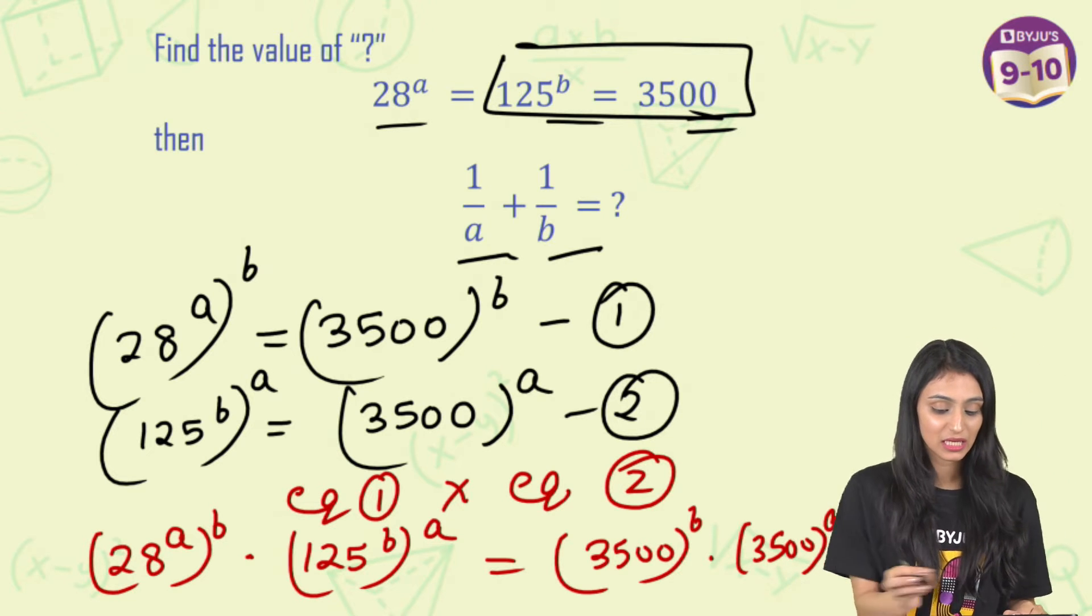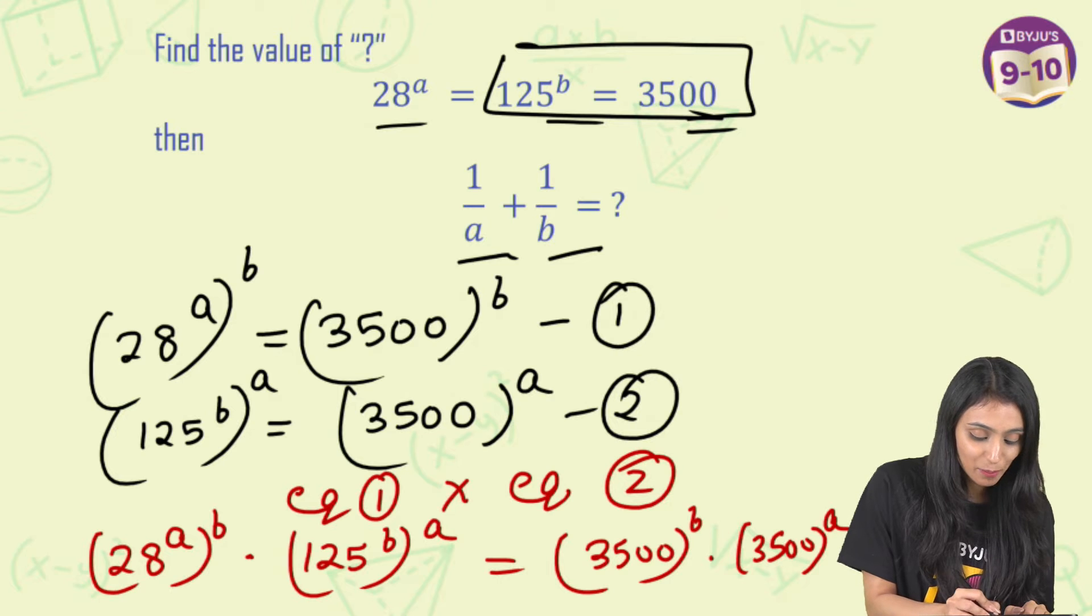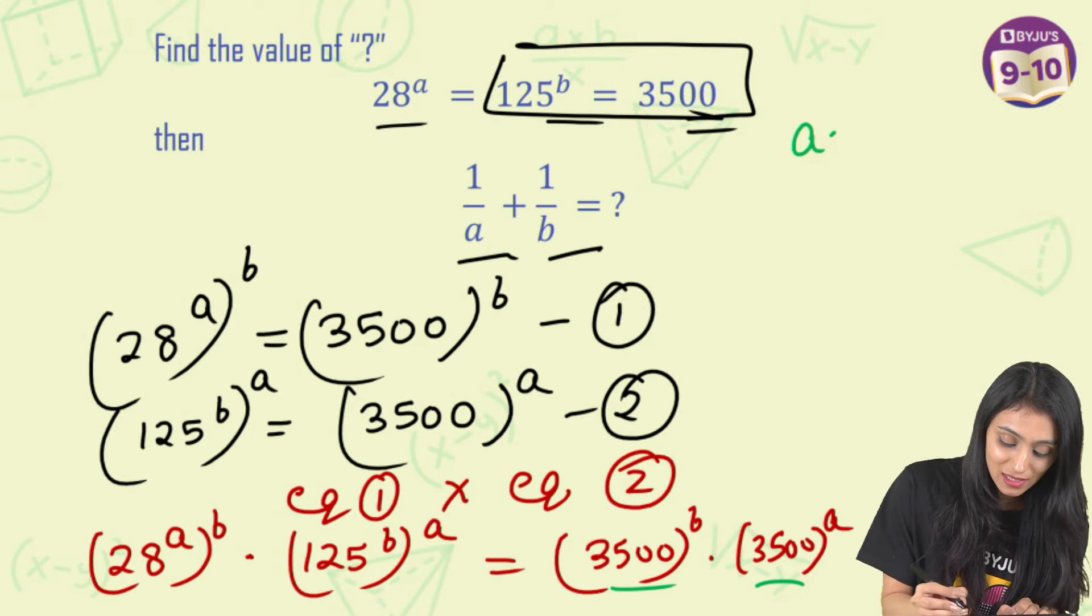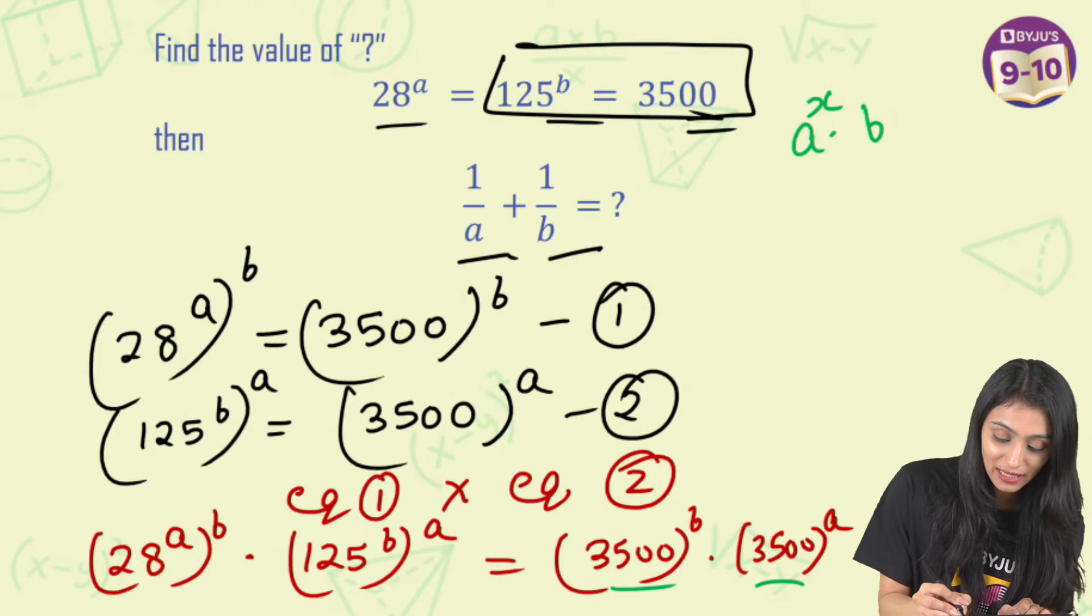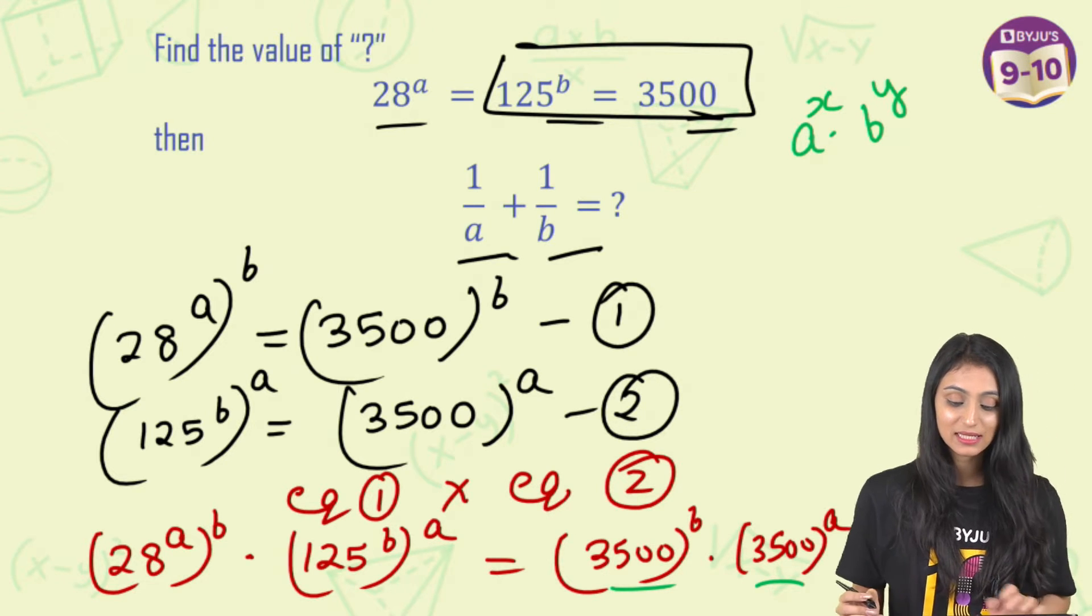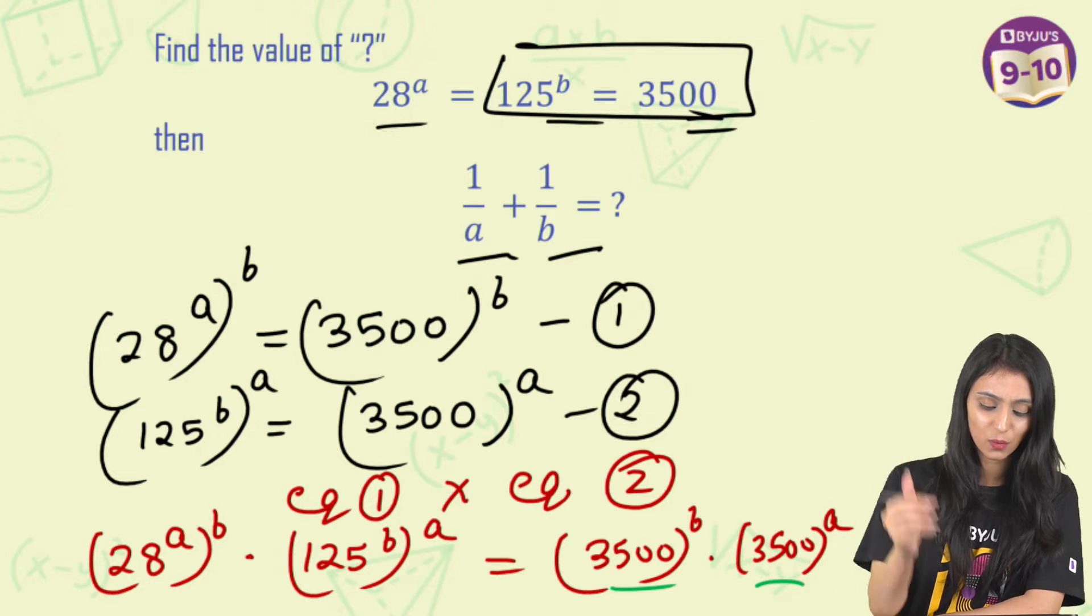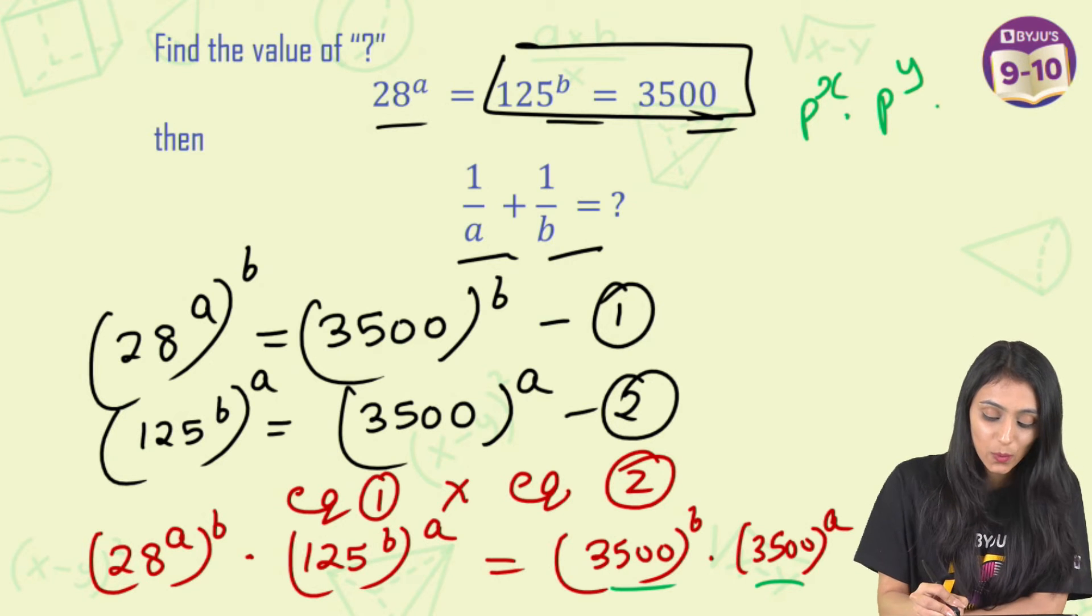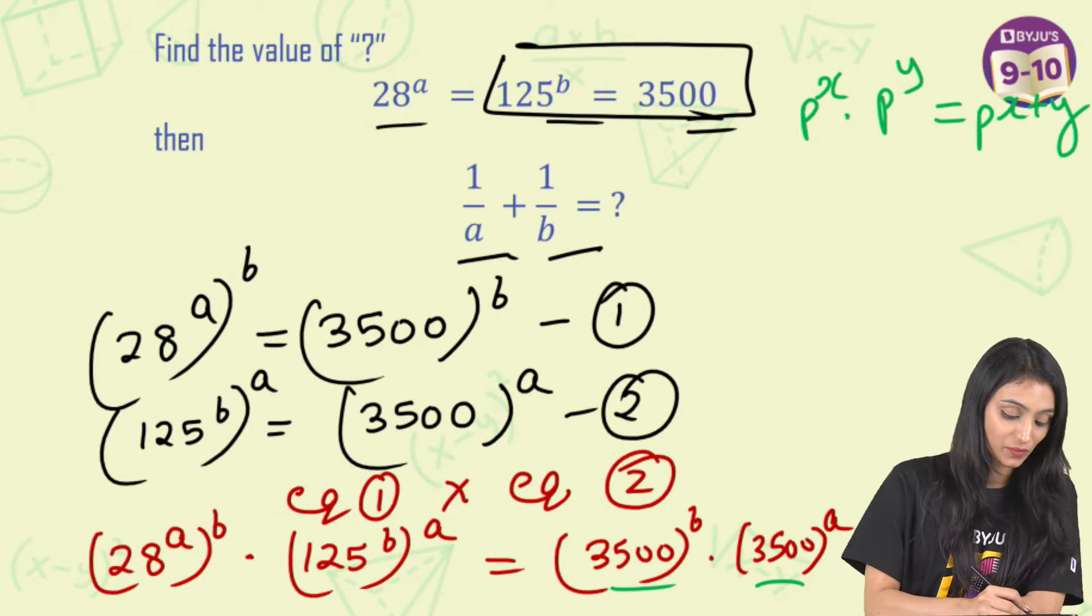Now it's very simple. If you see here on the right side the bases are same. So when bases are same what do we say? When bases are same and powers are different, like here we have bases are same but powers different. Let's suppose something else: P to the power X and here P to the power Y. What do we do? We simply add up the powers. P to the power X plus Y, right?